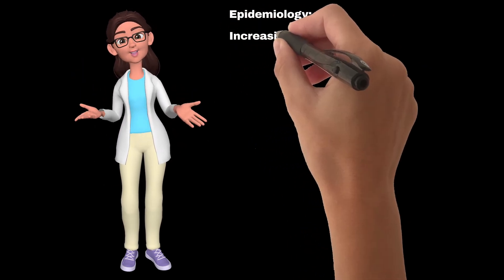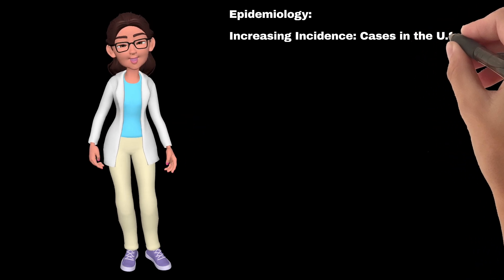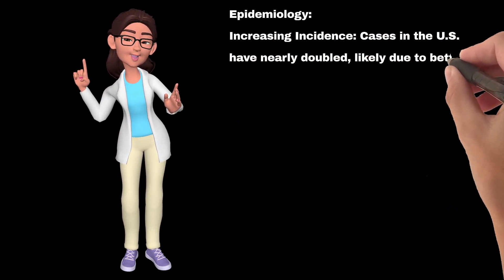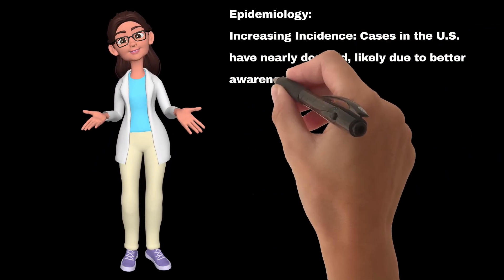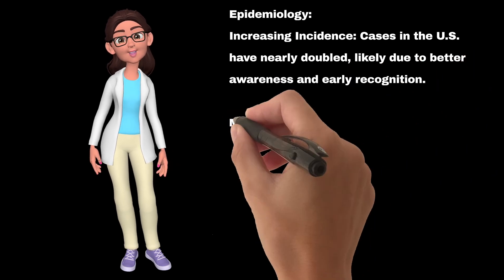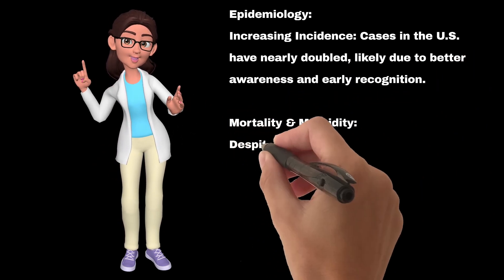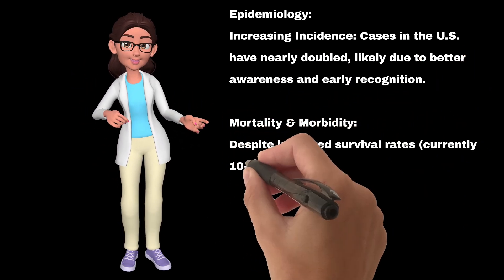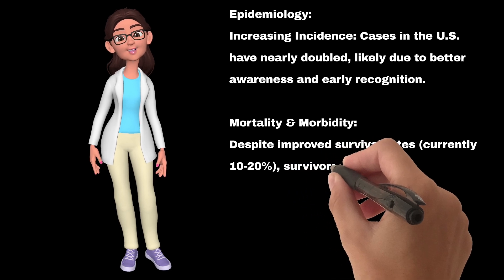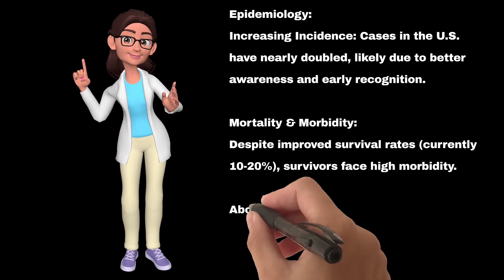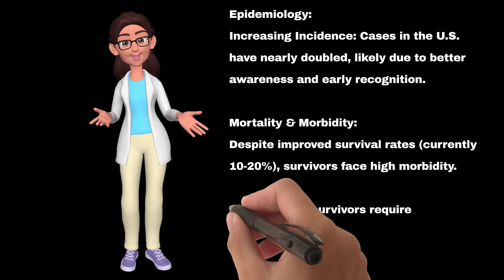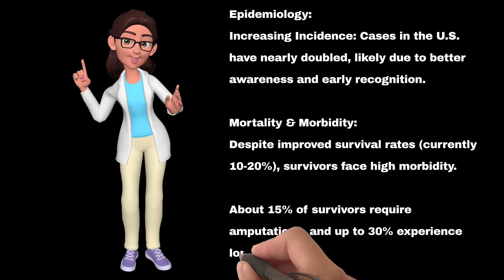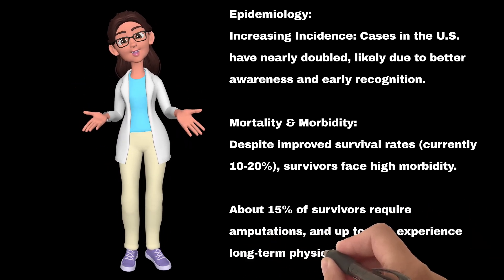Epidemiology: Increasing incidence — cases in the U.S. have nearly doubled, likely due to better awareness and early recognition. Despite improved survival rates, currently 10–20%, survivors face high morbidity. About 15% of survivors require amputations, and up to 30% experience long-term physical limitations.